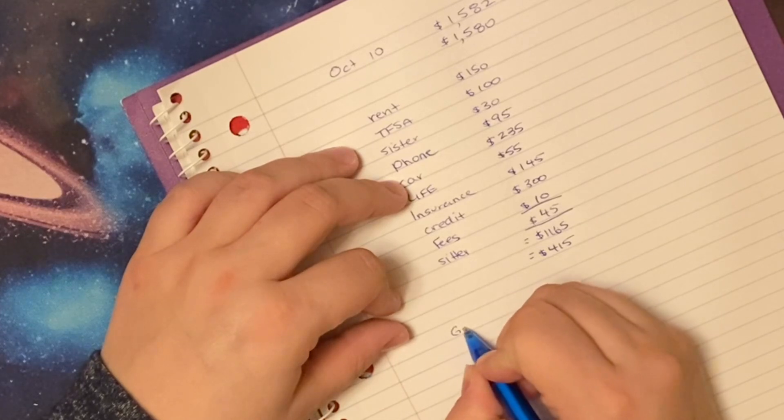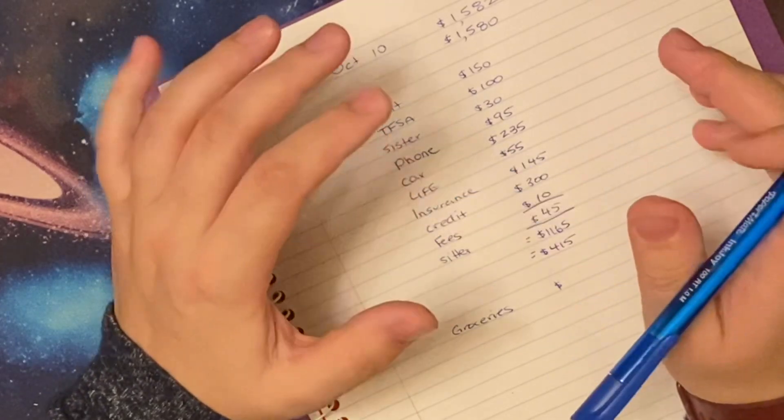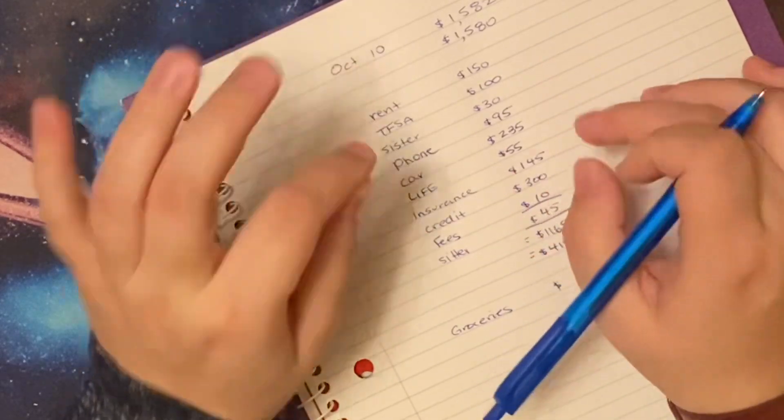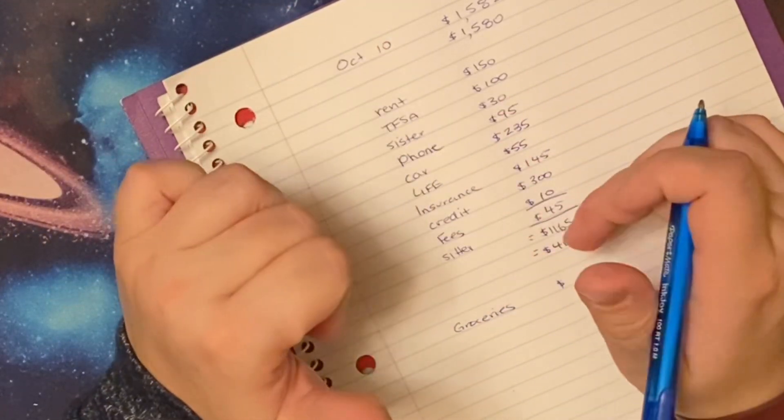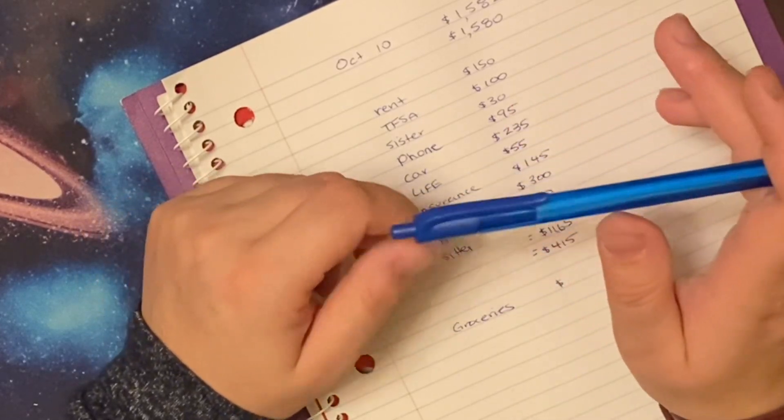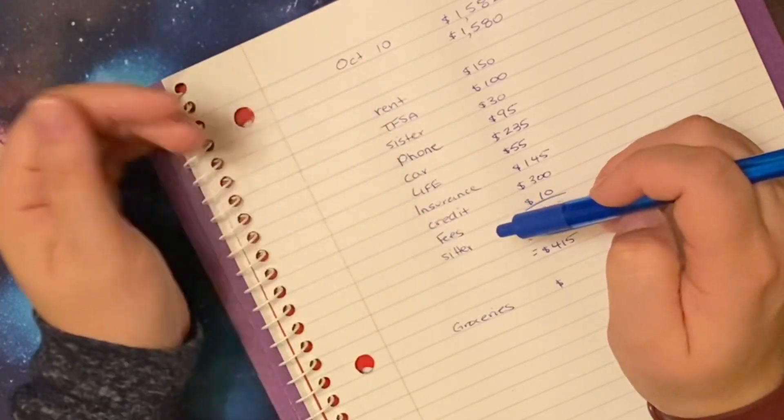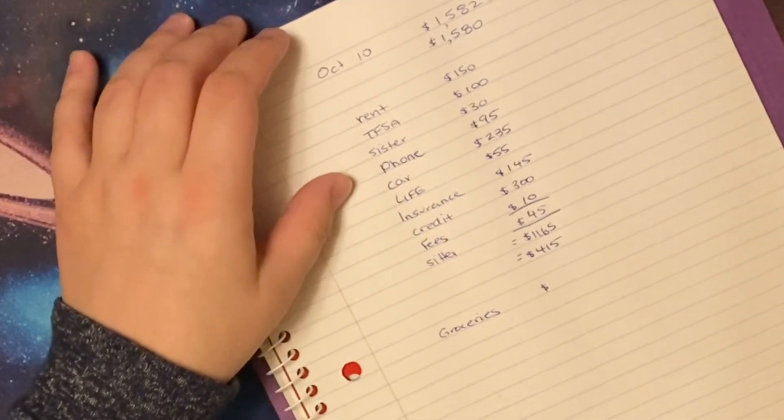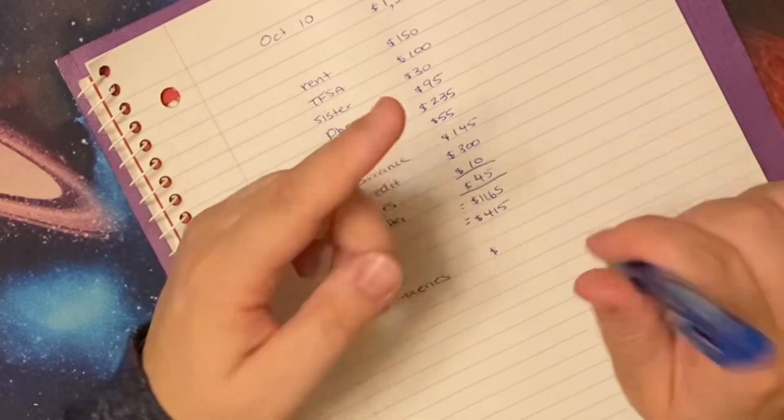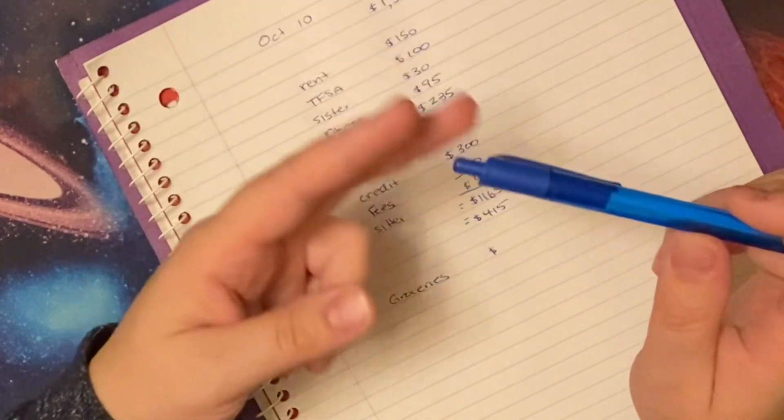I'm gonna start with groceries. This weekend it's Thanksgiving in Canada and I volunteered to make scalloped potatoes for a main course and an apple crisp for dessert. I don't have anything for the apple crisp but I do have everything for the scalloped potatoes. I need oats, sugar, cinnamon. I've got nutmeg but I need brown sugar and apples.